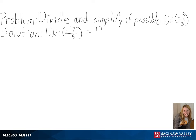The first part of our solution is to divide 12 by 1 to make it easier to divide. Then we can change the second fraction to its reciprocal, since dividing two fractions is the same as multiplying by the reciprocal.